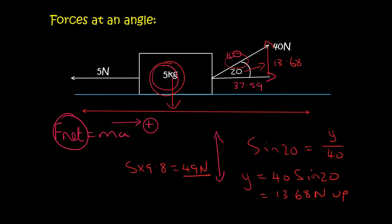So the gravity is 49 newtons down. The upwards force is 13.68 newtons and so that upwards force is not going to be enough to lift the object off the ground.